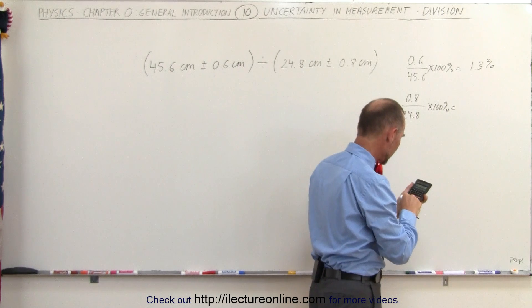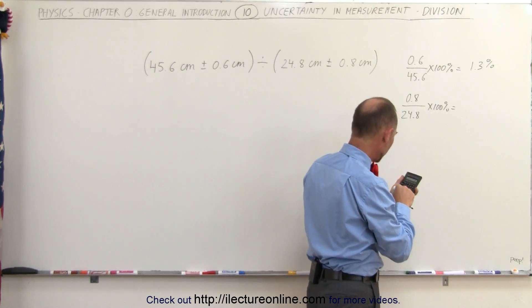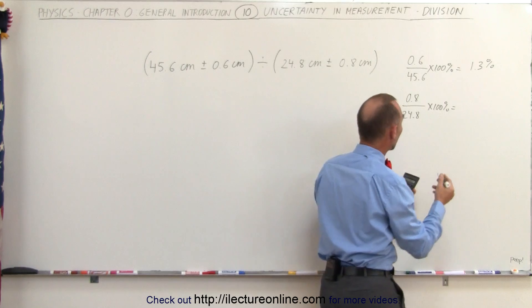And then if we take 0.8 and divide by 24.8 times 100%, that would be 3.2%.